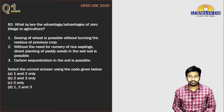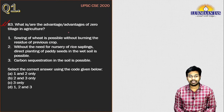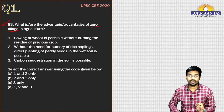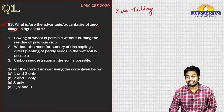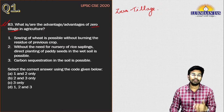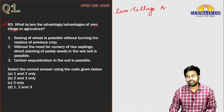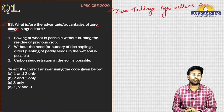Let us take the first question for the day. This question asks: what is or are the advantage or advantages of zero tillage in agriculture? This question revolves around zero tillage agriculture. Zero tillage agriculture is a practice where we are not fluffing or tilling the land before sowing the next crop. It is a new method of agricultural productivity.